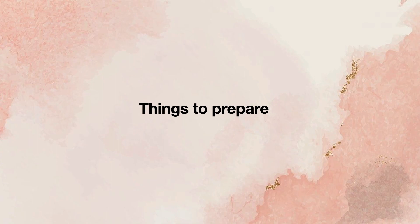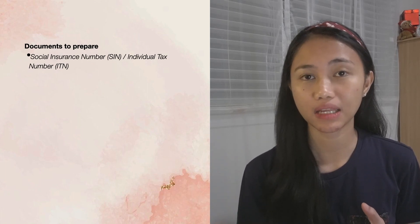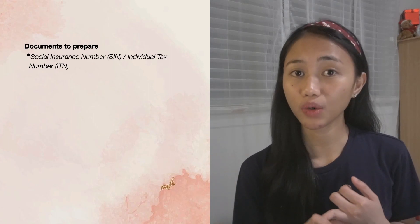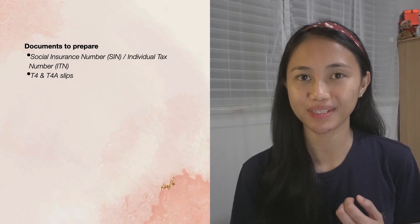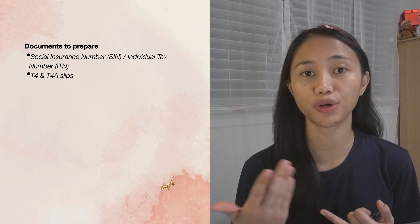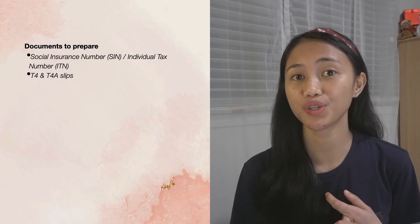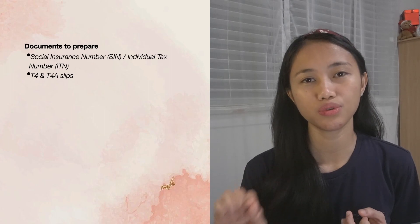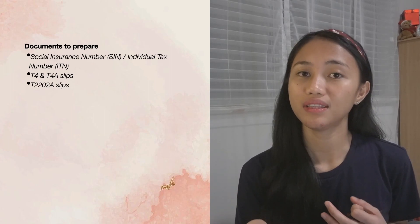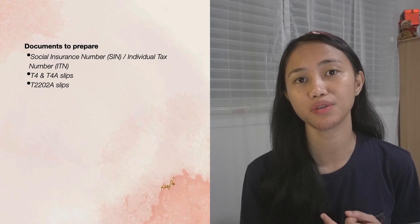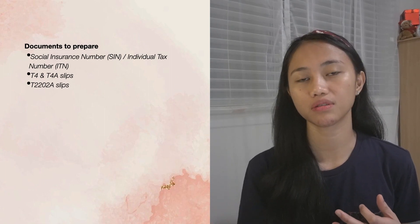What do you need to prepare for filing an income tax return? Whether you hire an accountant or complete your own return, you'll need the following documents if applicable. First, your Social Insurance Number or SIN — if you're not eligible for a SIN, you need to apply for an ITN or Individual Tax Number. Second, income tax slips like T4 from your employer for employment income, and T4A for income received from scholarships or bursary awards. Third, your tuition receipt, the T2202A slip, which shows the number of months you attended school and how much you paid for tuition.